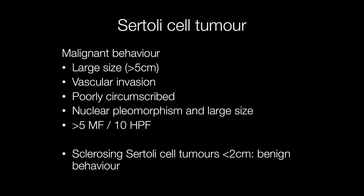As with other sex cord stromal tumours, it is difficult to predict how the tumour will behave histologically. However, there are a number of clues that may give an indication of behaviour. For Sertoli cell tumours, a large size (greater than 5 centimetres), vascular invasion, a poorly circumscribed tumour, nuclear pleomorphism with large nuclei, and a mitotic rate of more than 5 mitotic figures per 10 high power fields are all associated with an increased risk of malignant behaviour. In contrast to Leydig cell tumours, where malignant ones tend to occur in adulthood, malignant Sertoli cell tumours may occur in childhood.